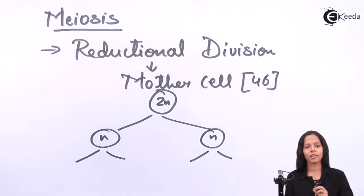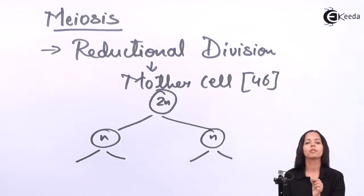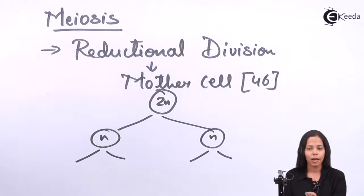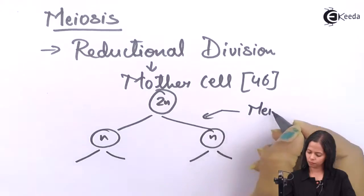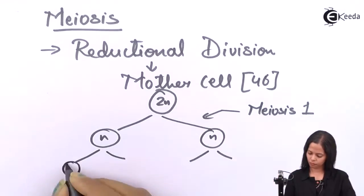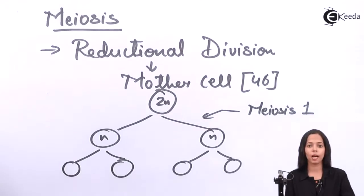And that situation or condition is called as haploid. Now this is called as reductional division but it's not completing the meiosis process. It is just the first major stage of meiosis which is called as meiosis 1. Later what happens, this haploid daughter cell undergoes mitosis.